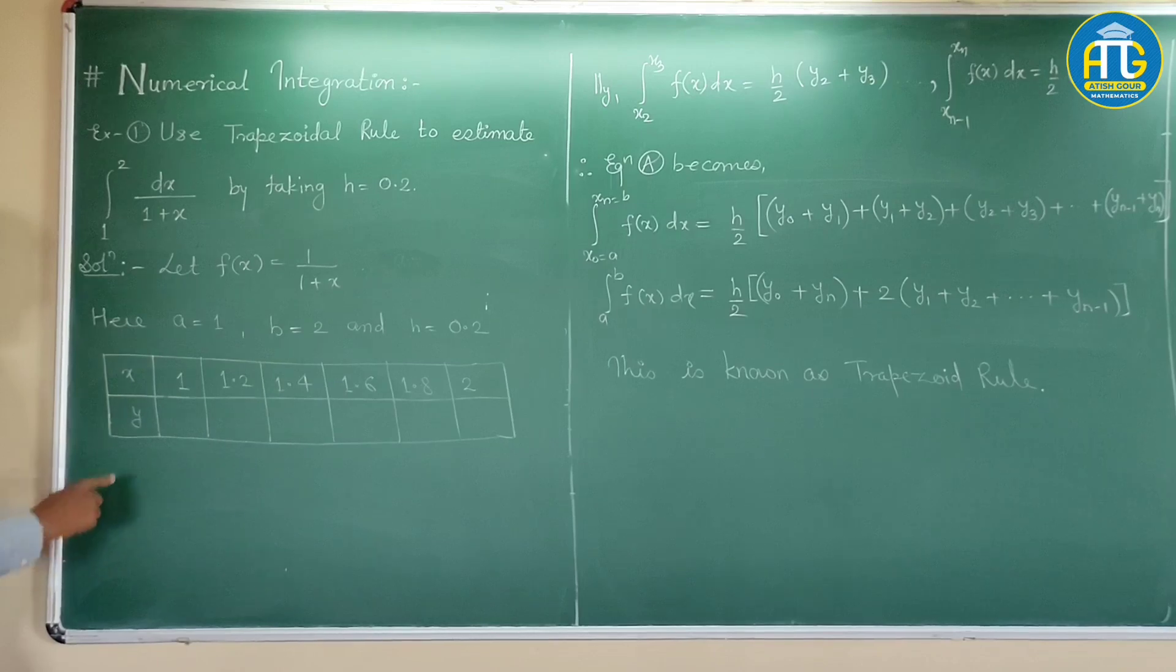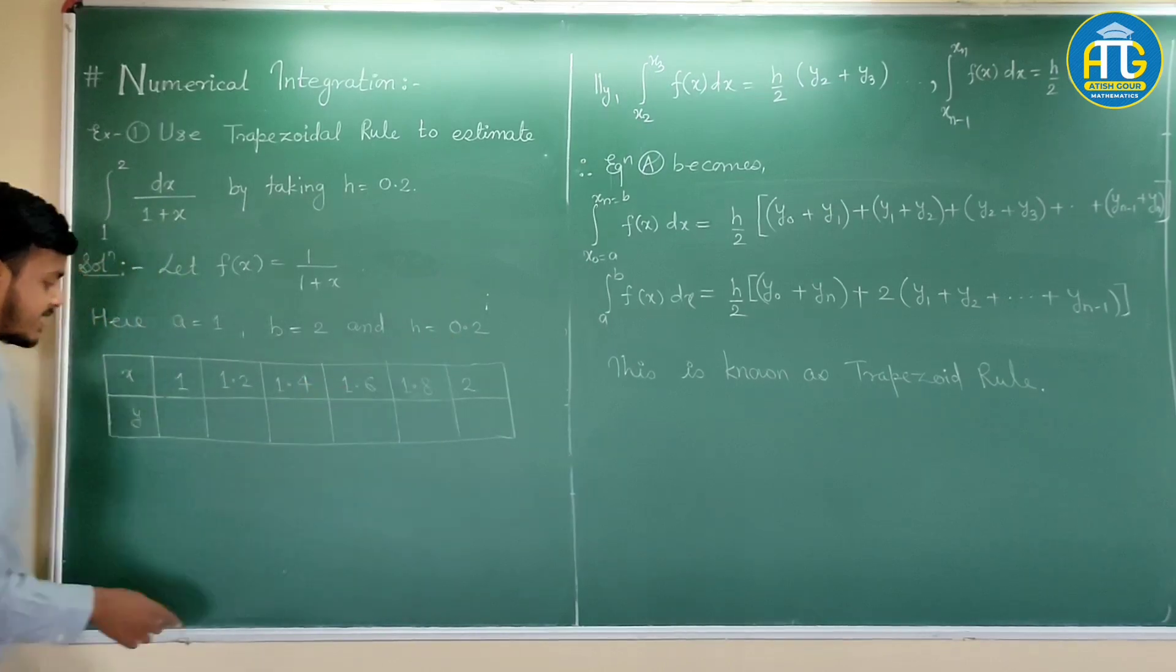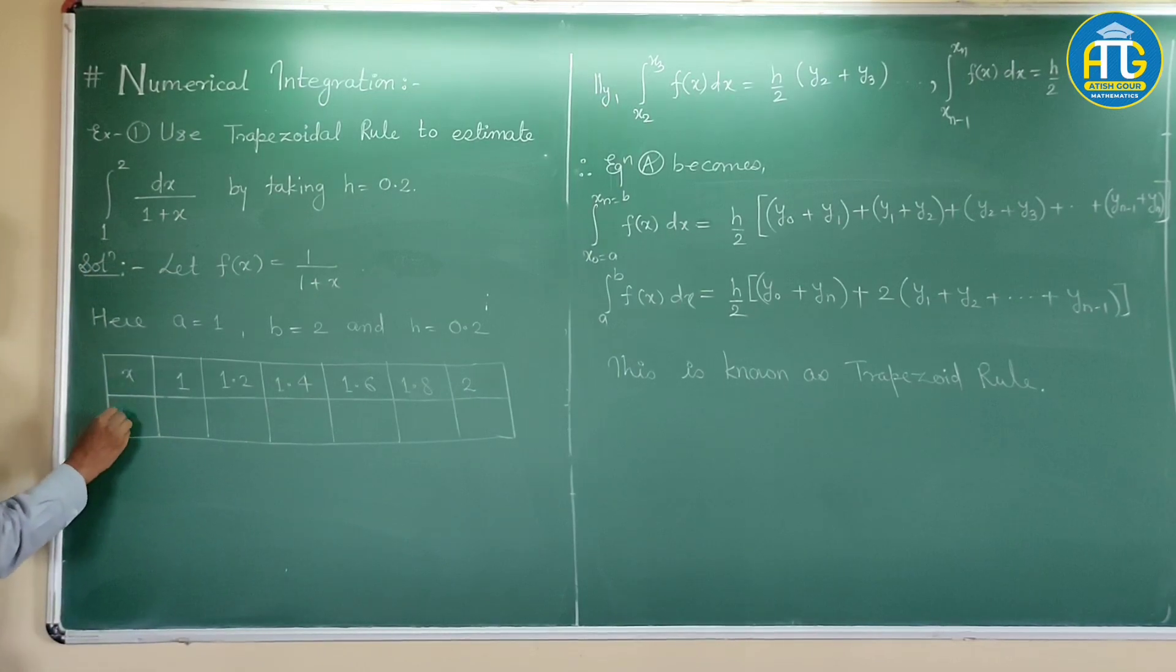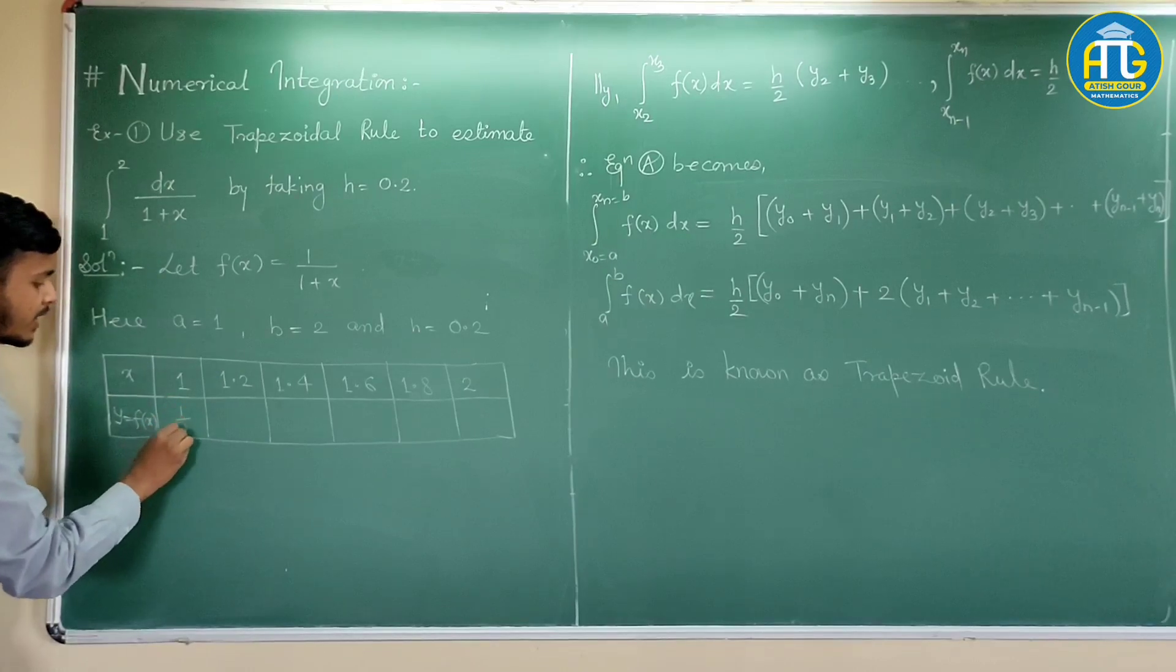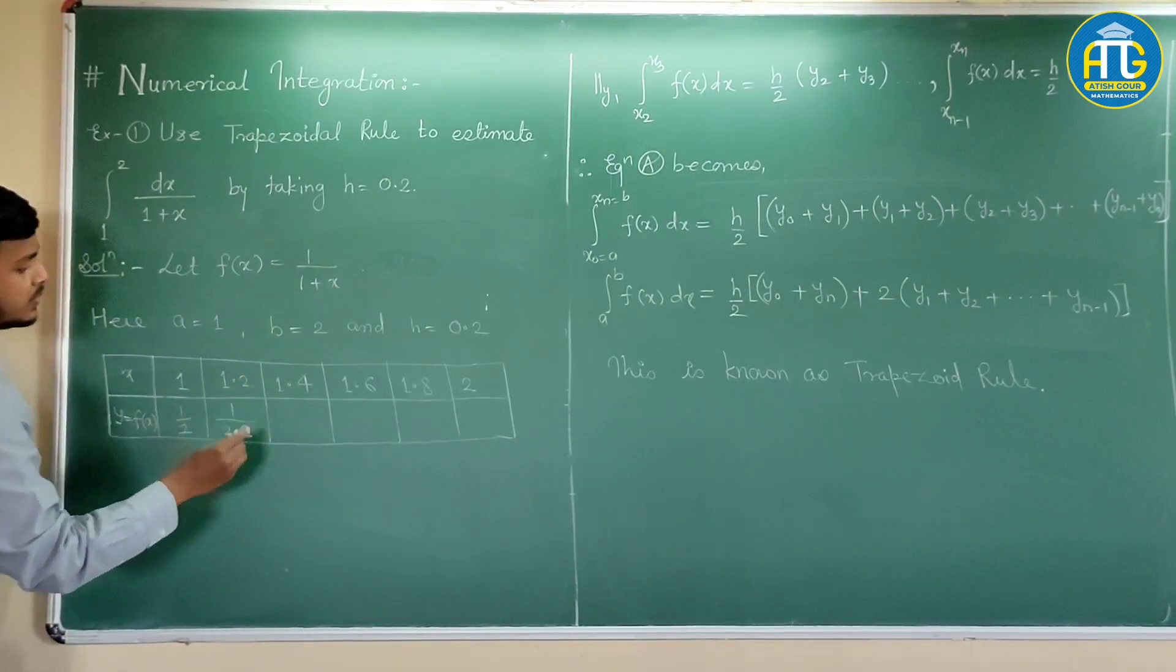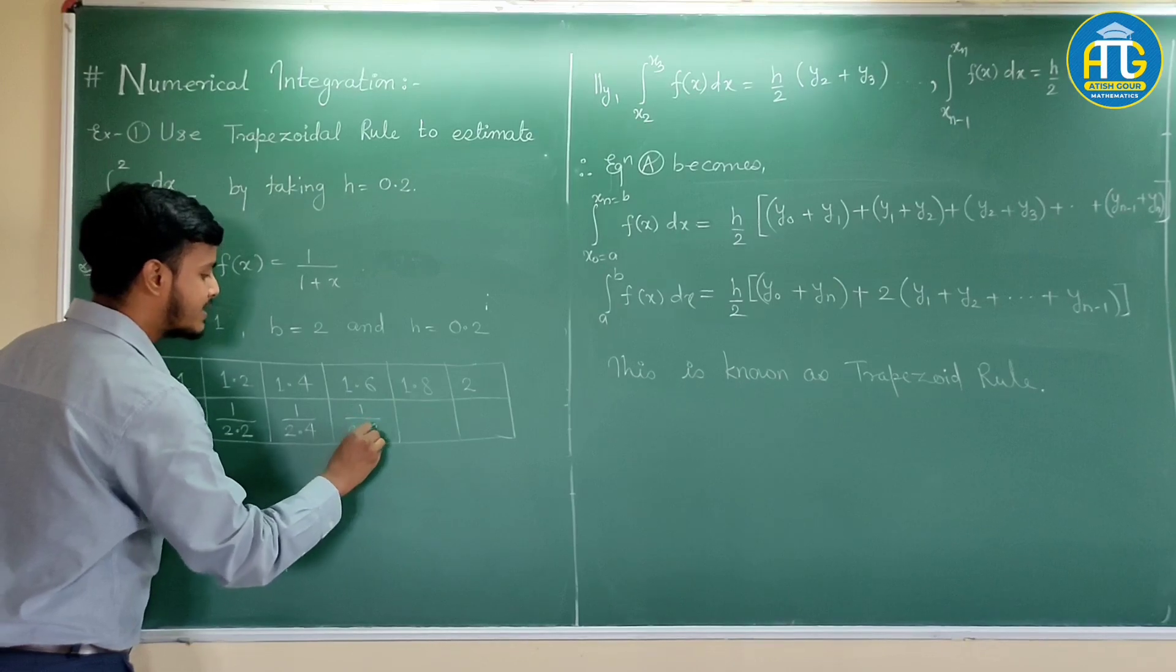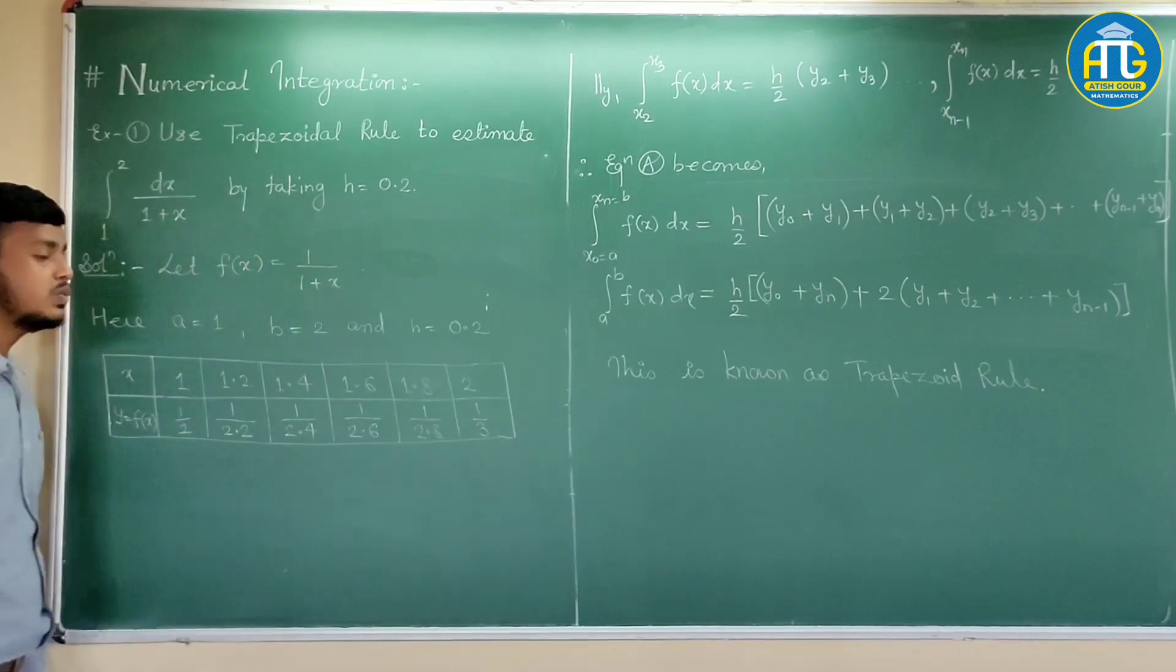Now these are the values of x that we got with the help of limit and the level of or the interval of differences. Now, you write down the values of this. This y is nothing but y is equal to f of x. You can put the value of x to be 1, so it would be 1 upon 1 plus 1 that is 1 by 2. Then you can substitute x is equal to 1.2, so this is 1 upon 2.2. This is 1 upon 2.4, 1 upon 2.6, 1 upon 2.8 and this is 1 upon 1 plus 2 that is 3.